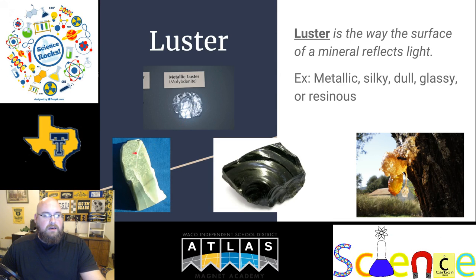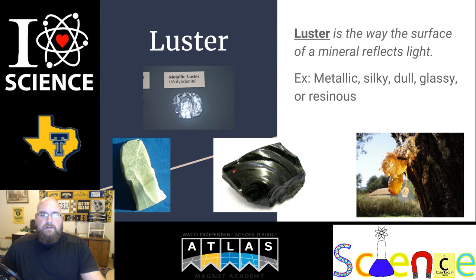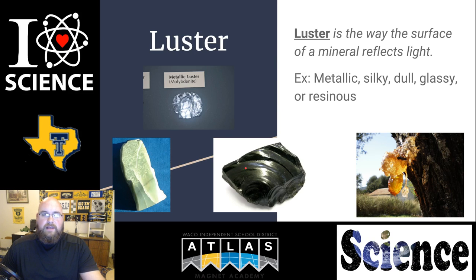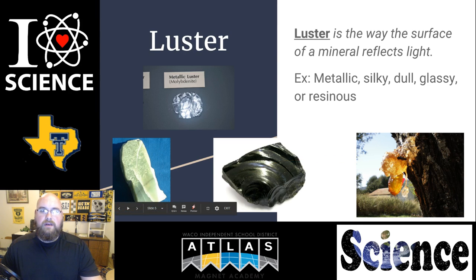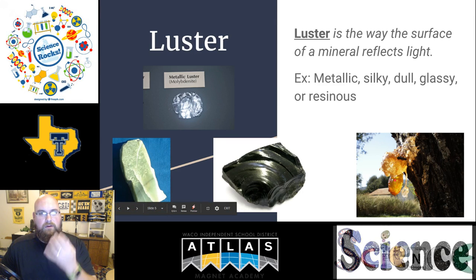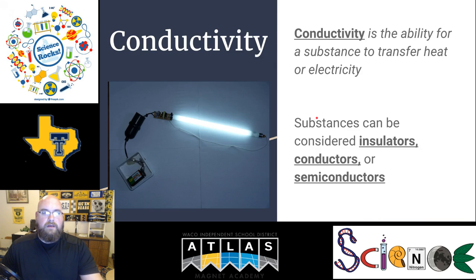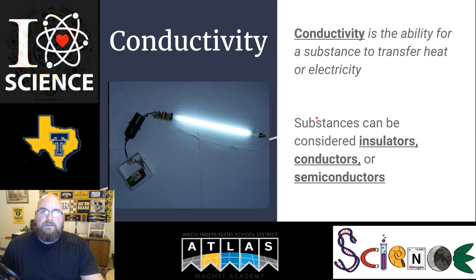Glassy luster reflects light at certain angles, but at others you can either see through it or see the actual color of the substance. The last type, resinous, is like amber made from trees — it's somewhat translucent, almost milky or see-through. Opaque is a word you may be familiar with, but resinous looks like that last example.